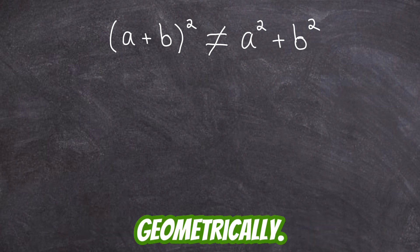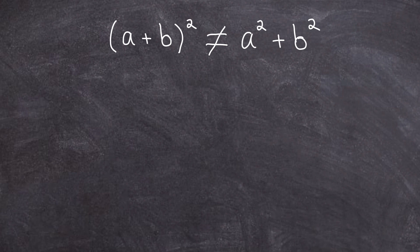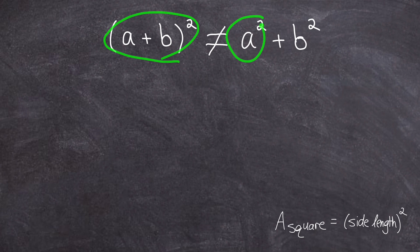Let's look at this geometrically. And to understand what I'm going to show you, all you have to know is the formula for the area of a square, which is just equal to its side length squared. And for that reason, we could look at all three terms that make up this incorrect equation.